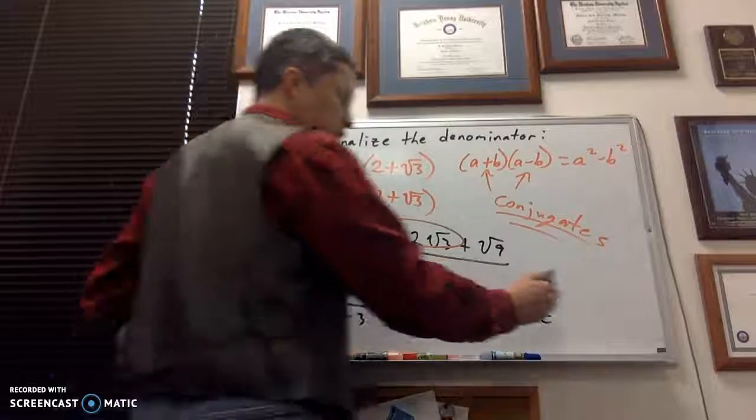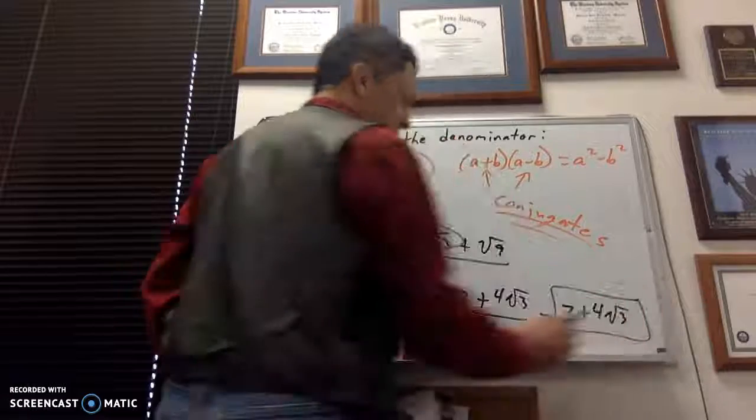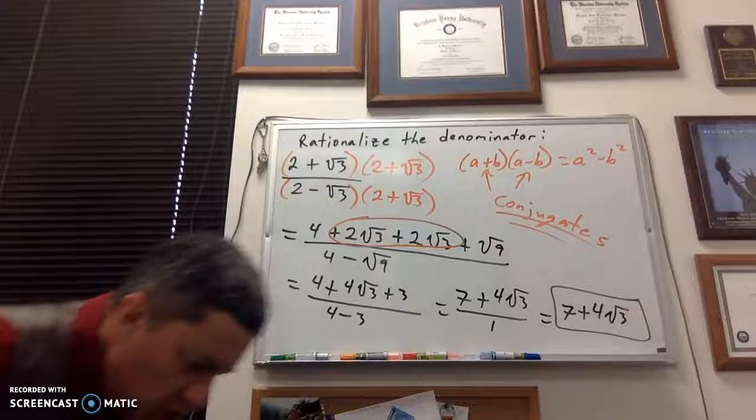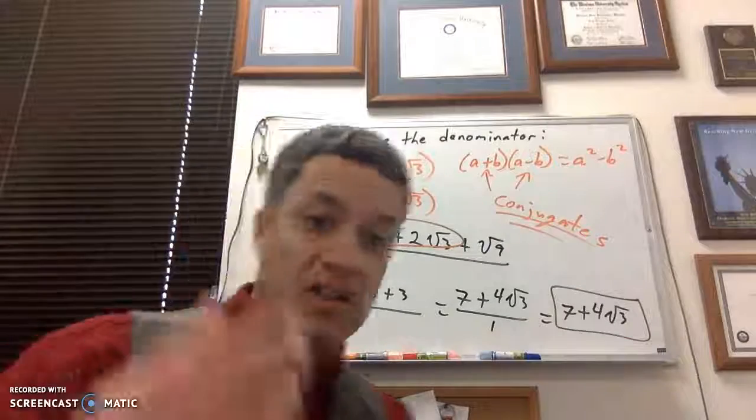So really, it's just my numerator, 7 plus 4 root of 3. Okay? And that's how you rationalize a denominator. If you have two terms in the denominator, you do it using the conjugate. That's all there is to it.